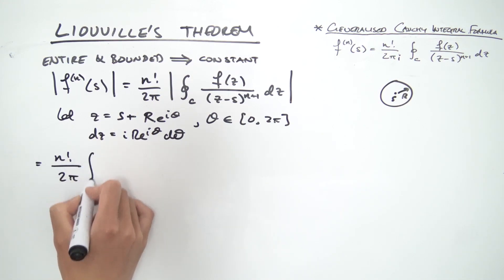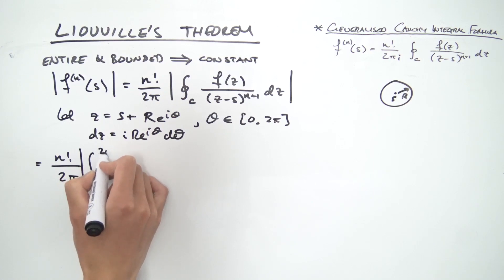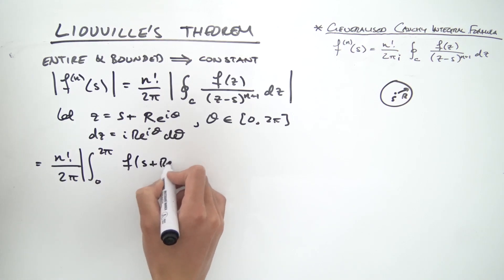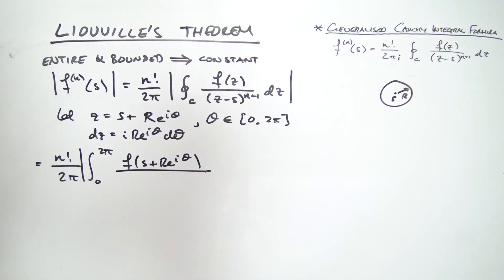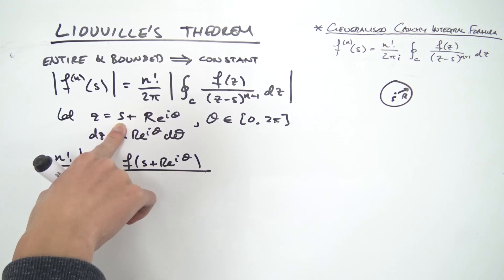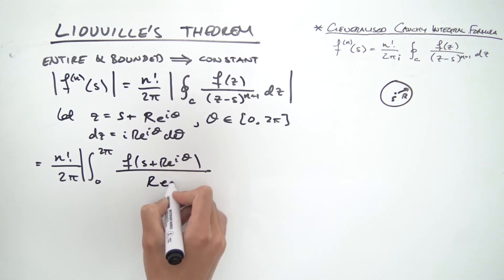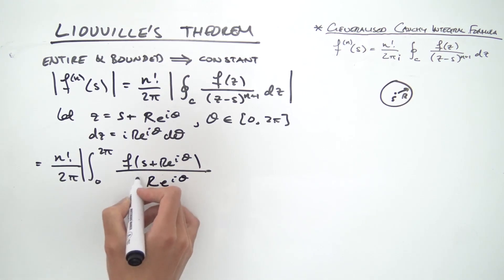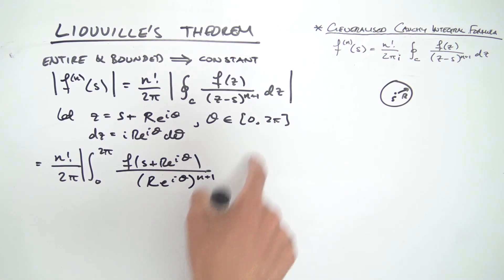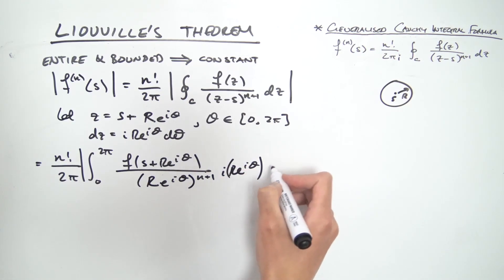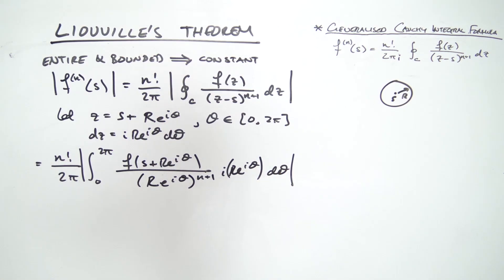Plugging everything in, this becomes n factorial over 2π times the absolute value of the integral from 0 to 2π of f(s + r·e^(iθ)) divided by (z − s), which simplifies to r·e^(iθ), raised to the (n+1) power, multiplied by dz = i·r·e^(iθ) dθ. We then use the integral inequality to bring the absolute values inside the integral.